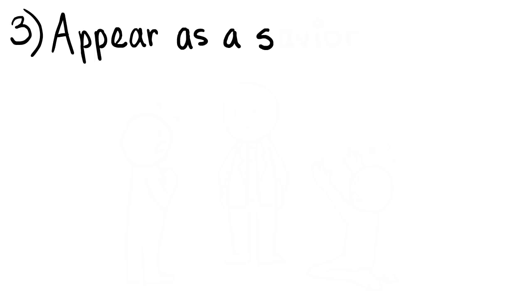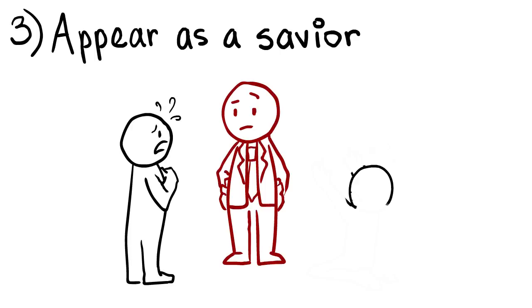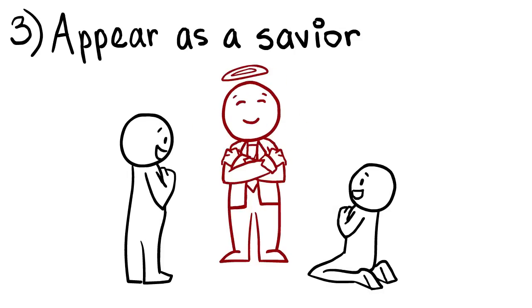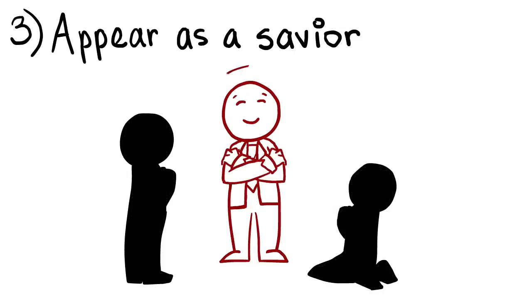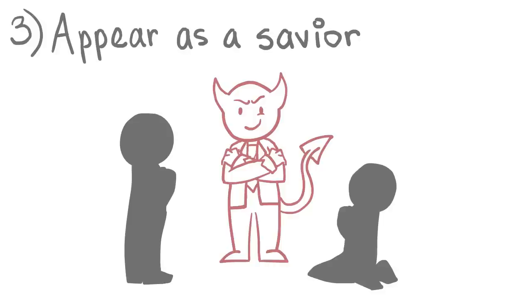3. Appear as a Savior. Sometimes psychopaths watch you carefully to attack in a non-physical way. They will often come to you as a savior, pretending to have something you want or need. They will give them what they need, earn their trust, and then threaten to take it away in order to manipulate them.